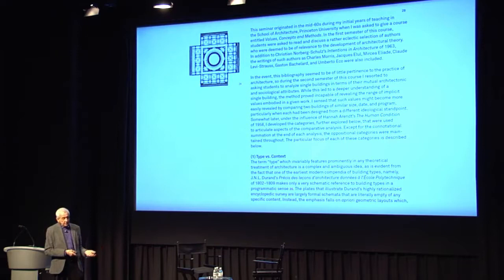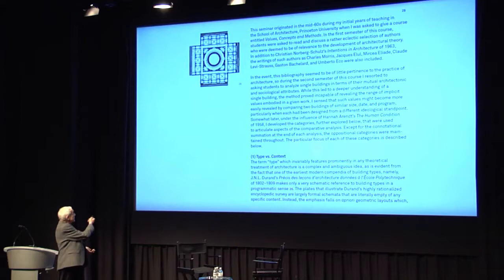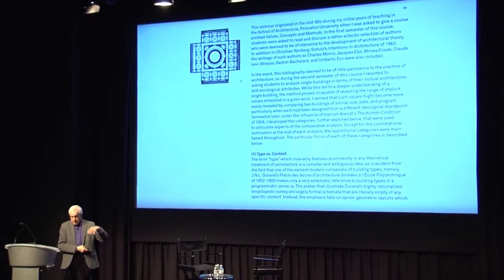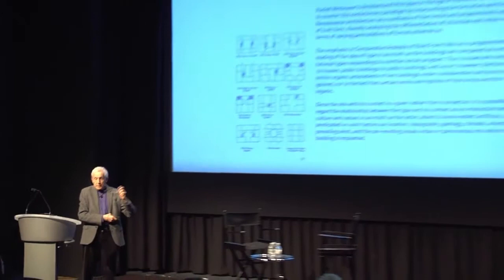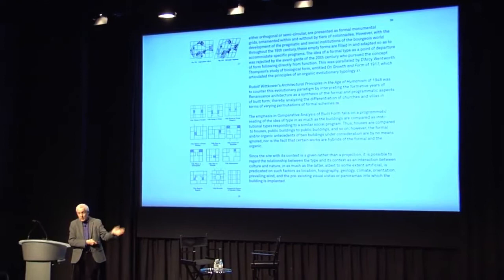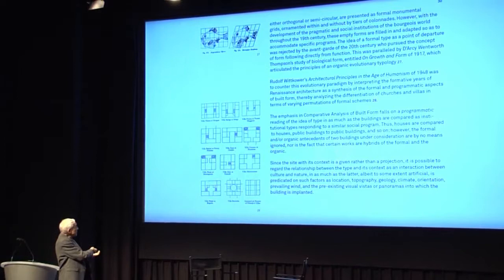The whole idea of type as a point of departure was very prevalent in the sixties, partly coming through Italian sources. Type in this sense — from Durand — is a hypothetical rationalized type, with a predilection for modularity. So one of the things I asked students to do was to look at two buildings, compare them as types, and type in relation to the context in which the building is situated.